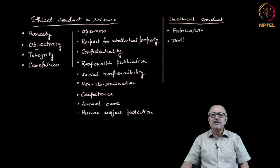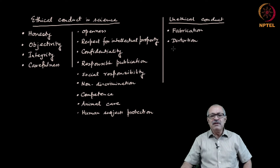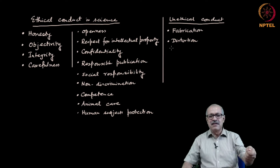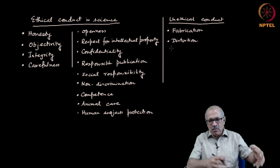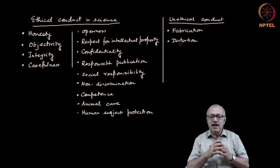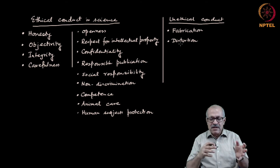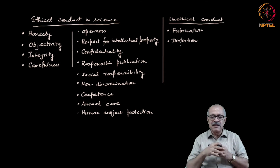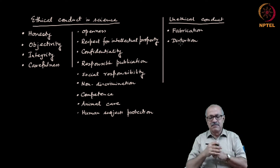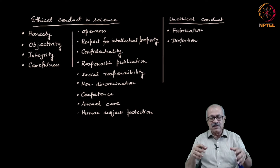The second is distortion. Distortion is when the results of an experiment are not conforming to your belief, and so you change things — maybe a little bit of change in the apparatus, the equipment, the consumables — so that the data conform to your belief. These are distortions: manipulating research materials, equipment, reagents, and processes so that the data coming out conform to your belief. Omitting outliers without showing a reason also constitutes distortion.